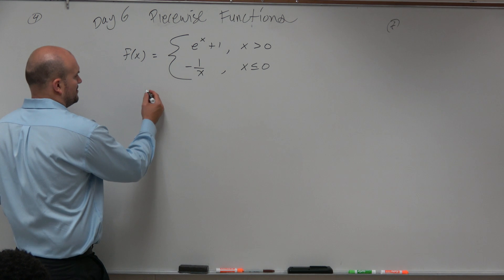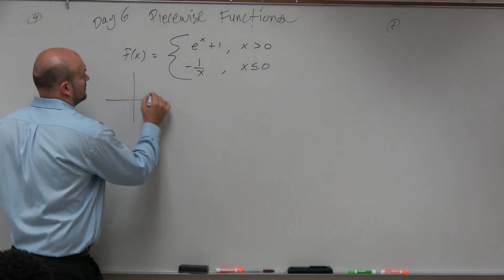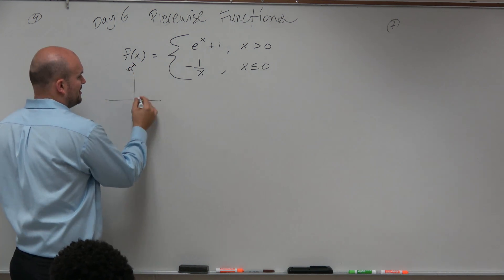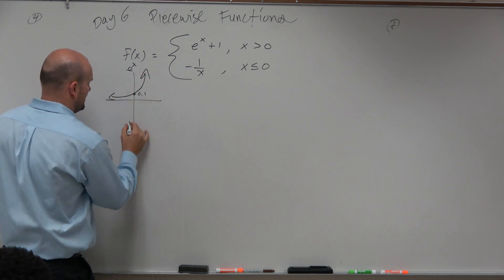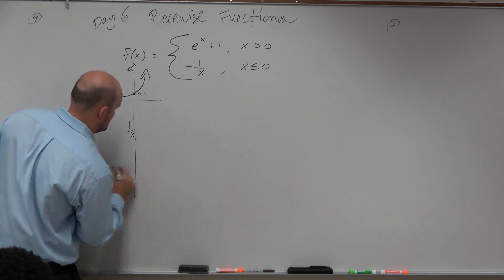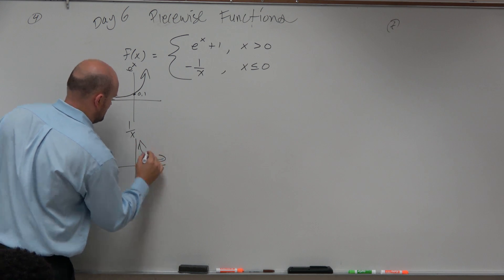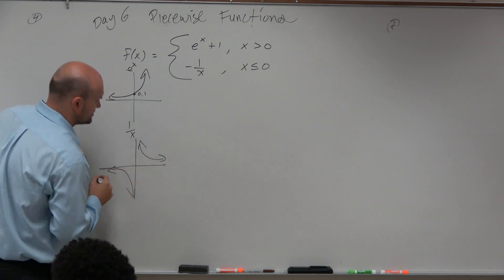So again, guys, I know e to the x, just the parent function, crosses that 0 comma 1, looks something like that. And I know 1 over x is like that hyperbola problem, something like that. So I'm just going to do these kind of correctly as one.